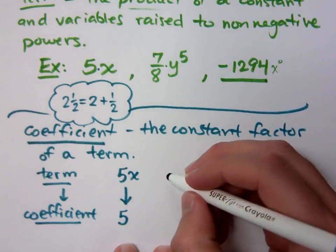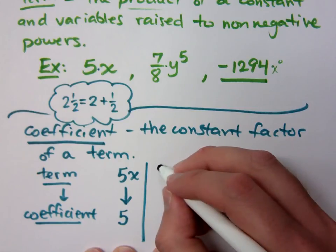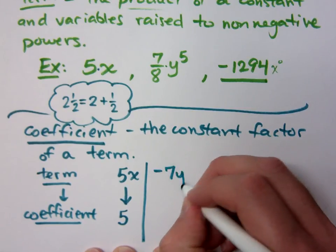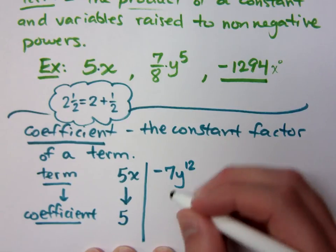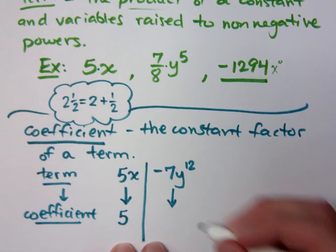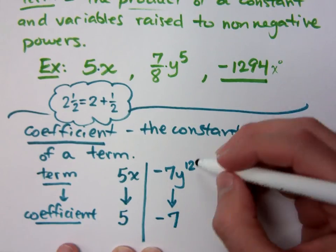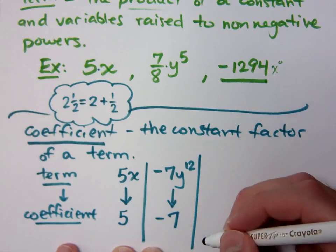If I were to say, let's say this, if I have negative 7, y to the 12th, what's the coefficient there? It's just negative 7, right?